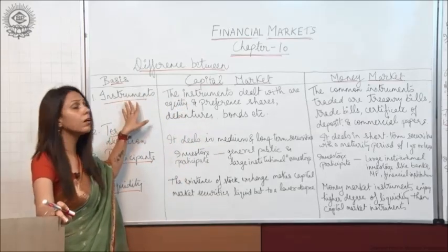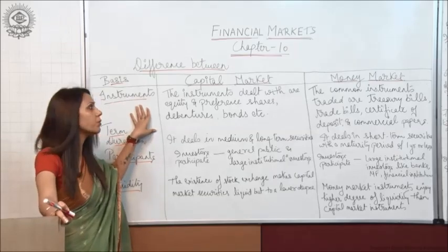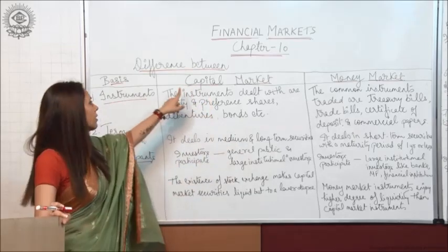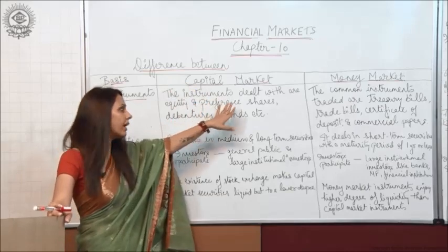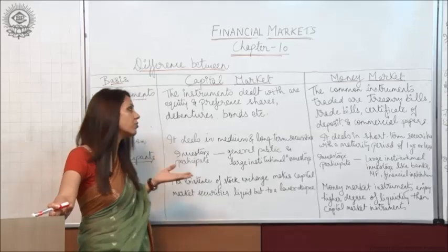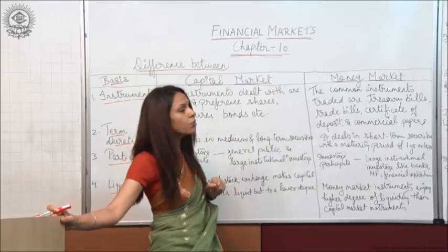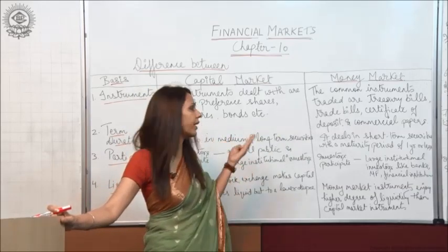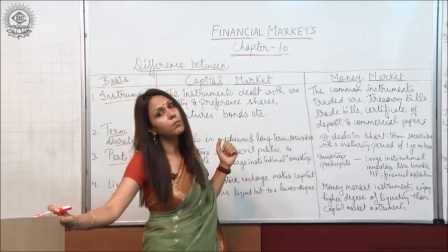The first basis is the instruments. What are the different instruments which are dealt with in these two types of markets? In capital market, the different instruments are equity shares, preference shares, and debentures or different types of bonds. In money market, the common instruments are trade bills, treasury bills, and certificate of deposit and commercial papers.